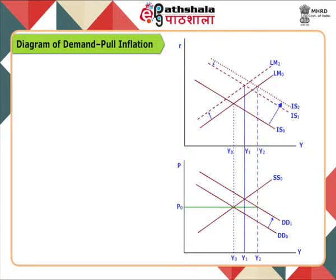In the lower panel, aggregate demand decreases as a result of the increase in price level along demand curve DD1. As price level increases, aggregate supply increases along supply curve SS0, and a new equilibrium is established at Y1 level of output with price level P1. At Y1 with price level P1, all markets clear and are in equilibrium. Hence, when demand-pull inflation arises, there is simultaneously an increase in the level of output.